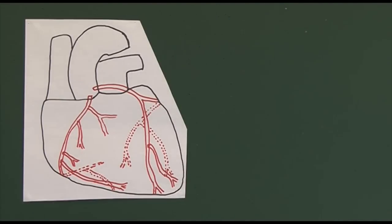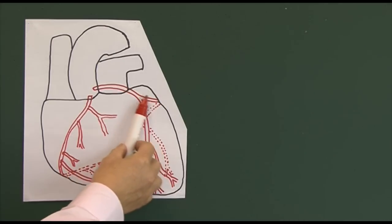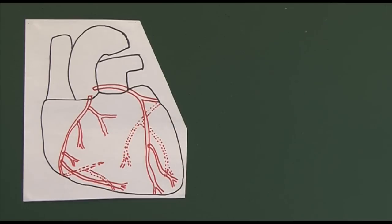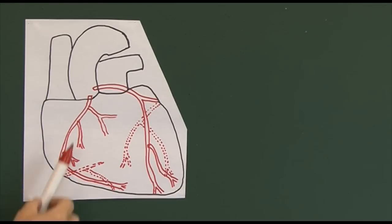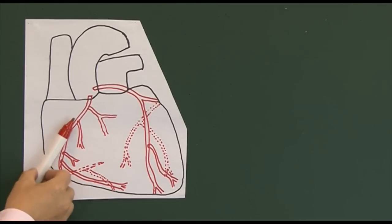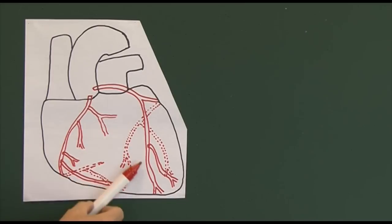This diagram is aimed at showing us the distribution of the coronary arteries. First, a bit of orientation: this is the area of the left atrium up here, and the right atrium would be in this area here. This is the right ventricle and this is the left ventricle.